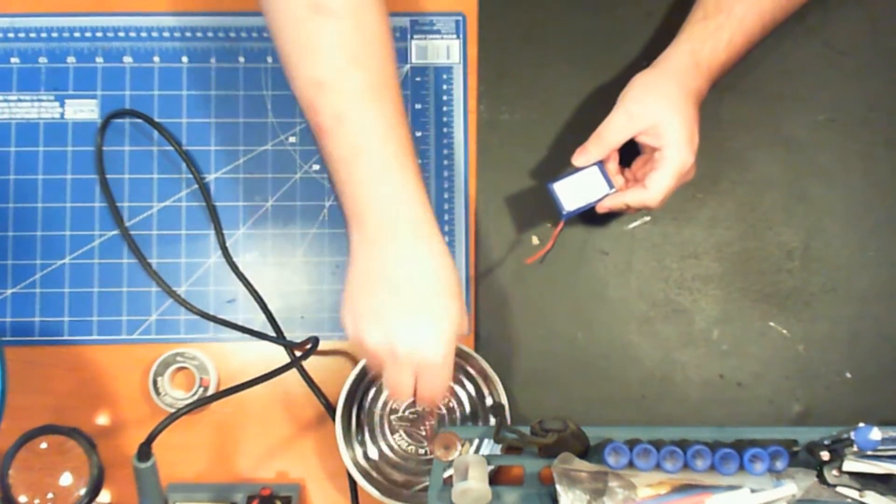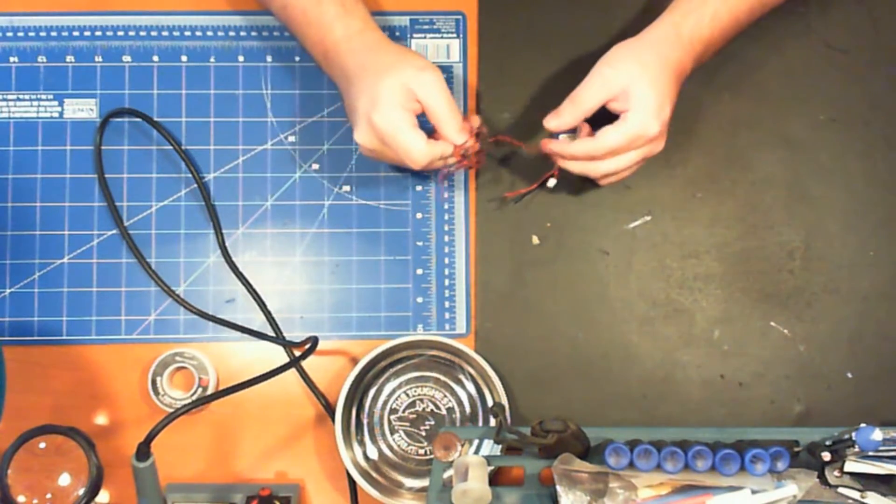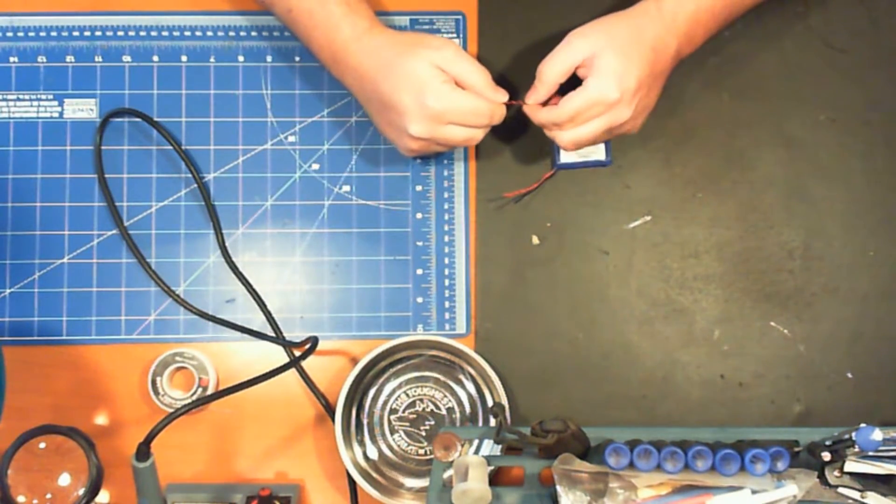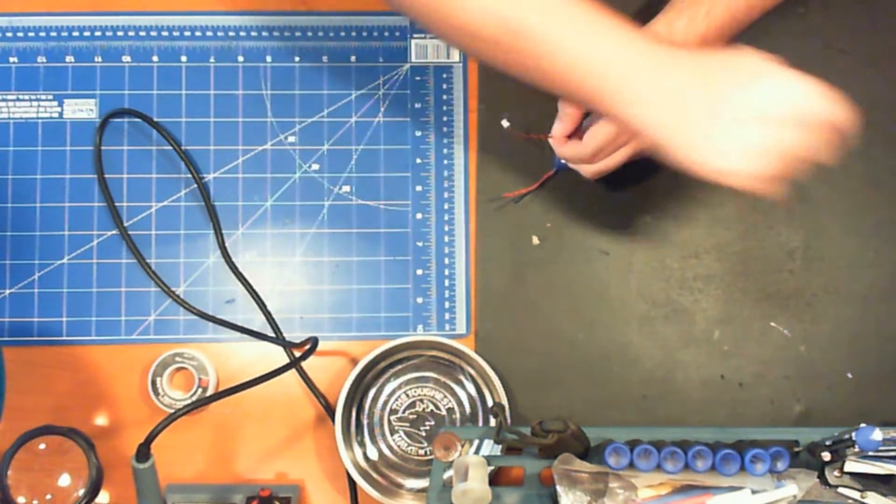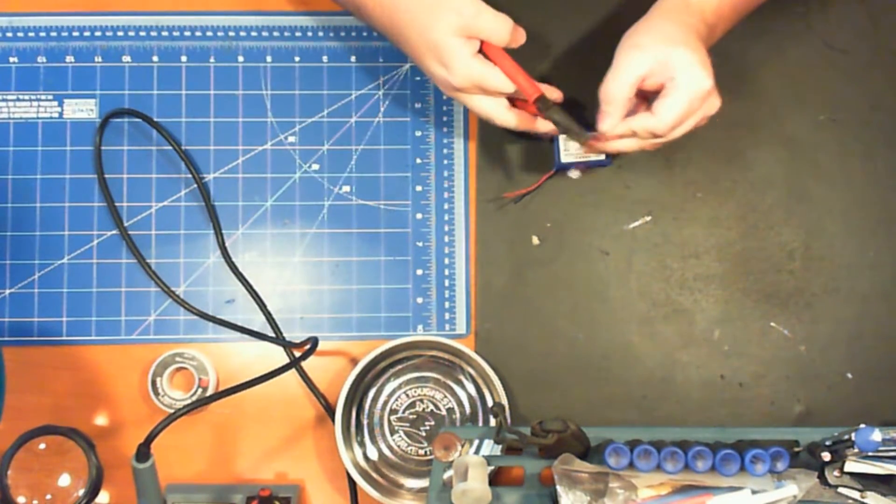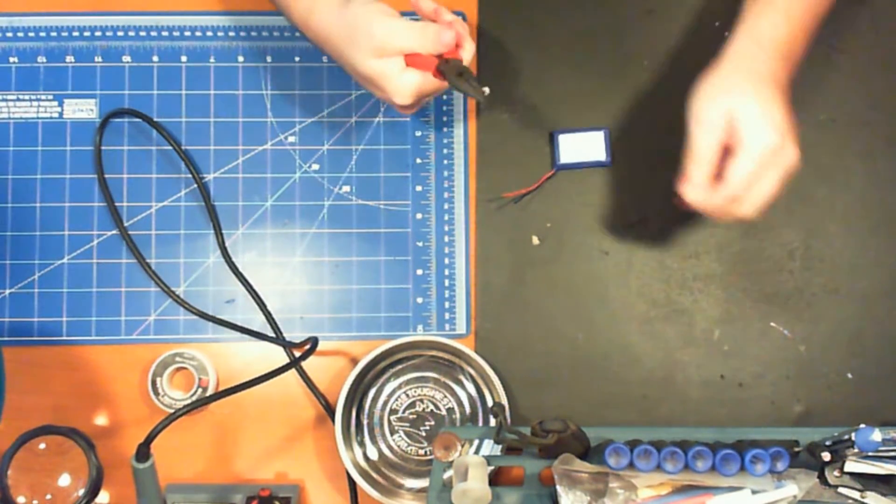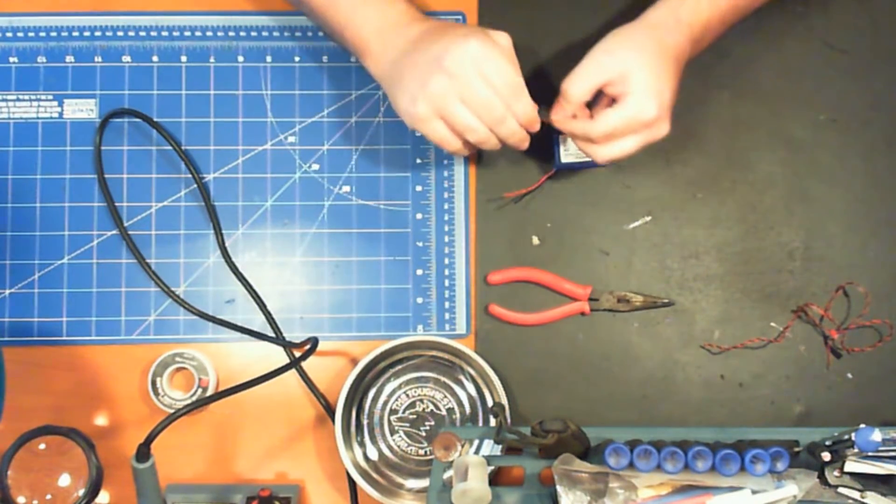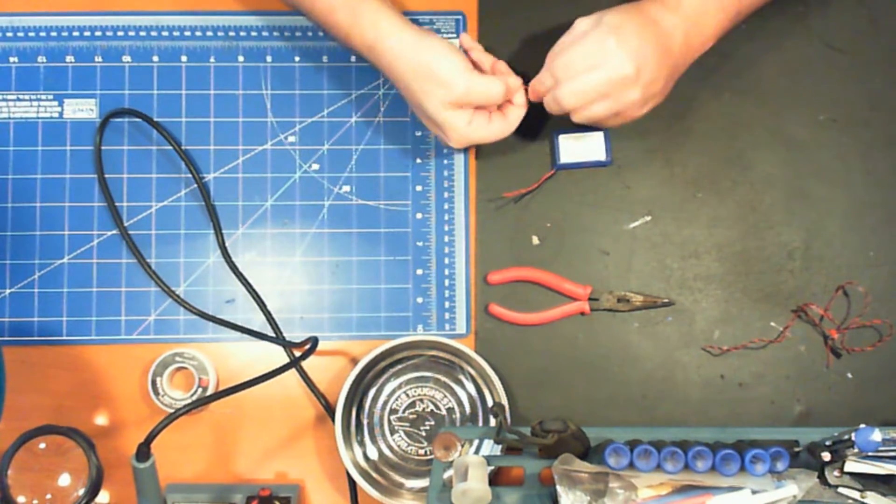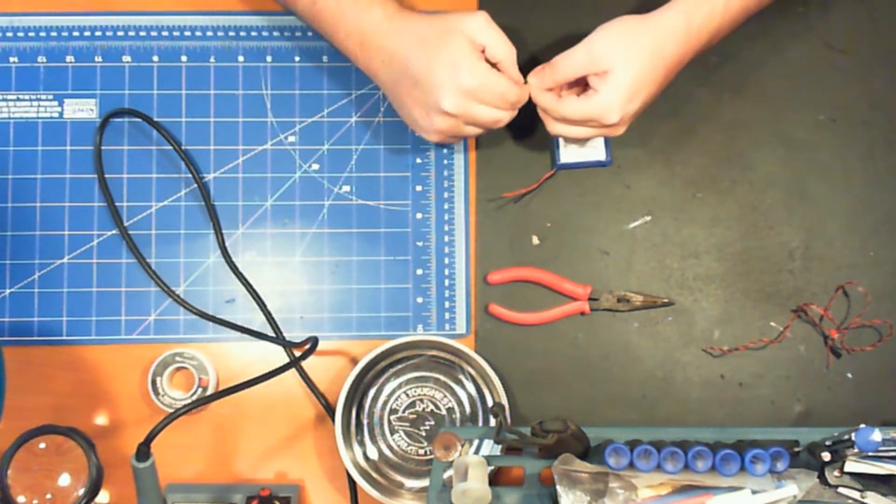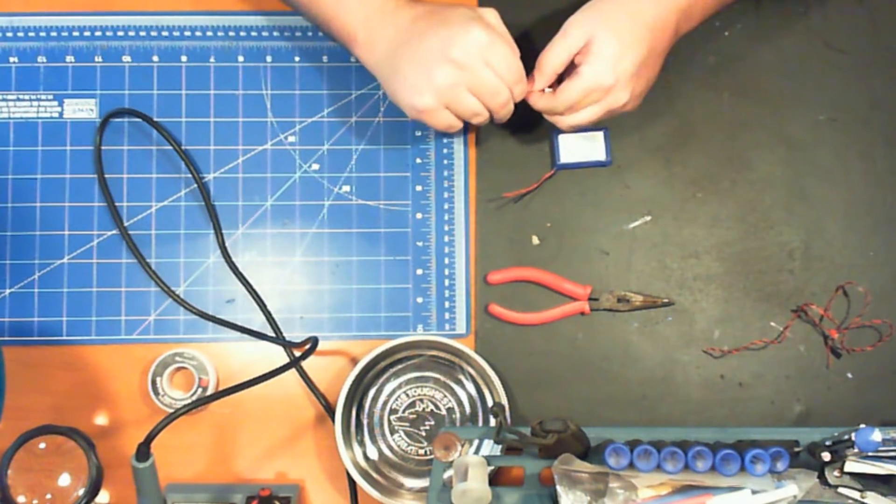So your controller, you're going to need a JST-PH connector. I happen to have one here. So we're going to go ahead and trim that down because we don't want to have too much excess wire. And there is going to be some soldering involved here. So hopefully you have an iron heated up and you've done some soldering before.